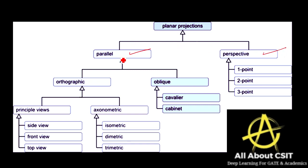Parallel projection is of two types: orthographic projection and oblique projection. Orthographic can be seen as principal views or axonometric views. Principal view means you can see the side view, front view, and top view. Axonometric view means the image can be projected in isometric, diametric, and trimetric forms. These are all parallel projections.